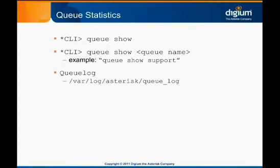This data can be put into a database for automatic analysis without too much trouble. The queue log on our test system won't be very interesting yet, because we only have that one queue call and it wasn't even answered. But the queue log is an invaluable tool for active queues. Additionally, there are several third-party tools that make queue monitoring and management even easier. Querying for 'asterisk queue reporting' or 'asterisk queue stats' in your favorite search engine will point you at several available utilities.